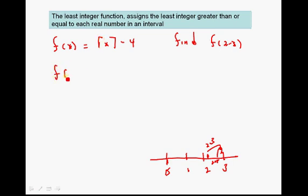So, let's take a look at f of 2.3 is equal to the least integer of 2.3, which is 3, minus 4. And 3 minus 4 is negative 1. So, f of 2.3 for the least integer function is negative 1.